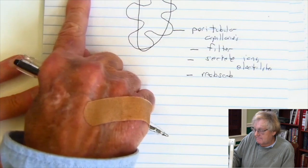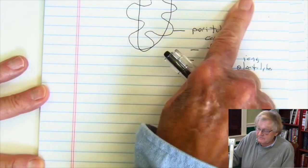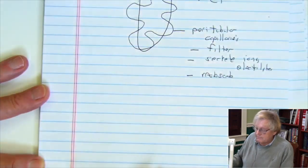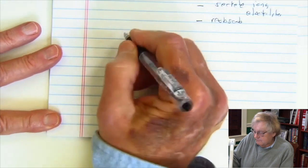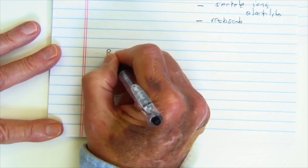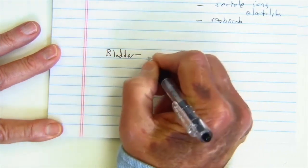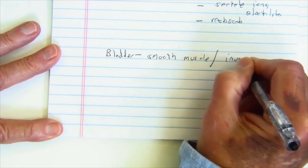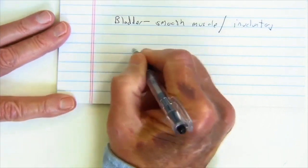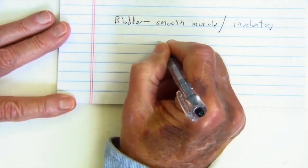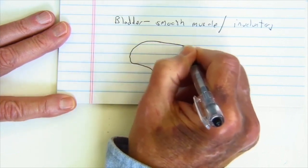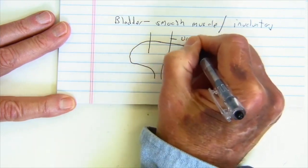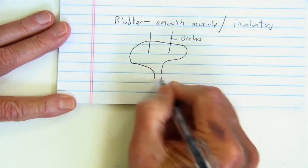We've taken blood, filtered it, sent it back into the renal vein, and created urine coming out of the collecting tubule. That urine goes into the bladder. Remember your bladder is going to be smooth muscle and involuntary. The bladder has ureters bringing urine from the kidneys, and then it passes into the urethra.